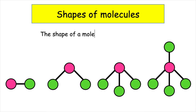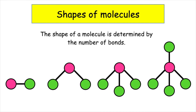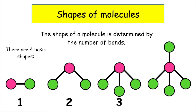The shape of a molecule is determined by the number of bonds that the central atom has to achieve stability. There are four basic shapes that we have to know. The central atom is represented by the pink circle and it can form either one, two, three, or four bonds, which represent the four different shapes that we're going to look at.